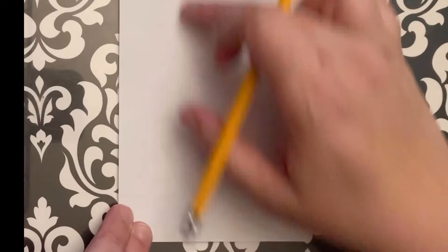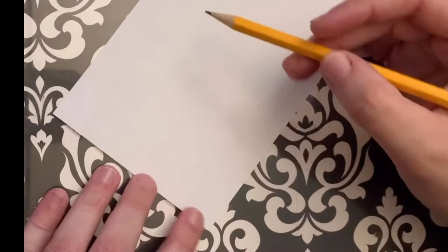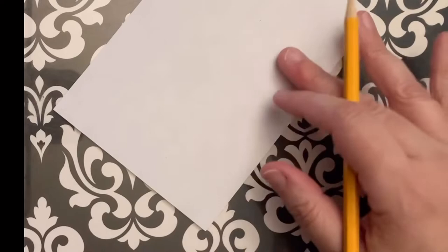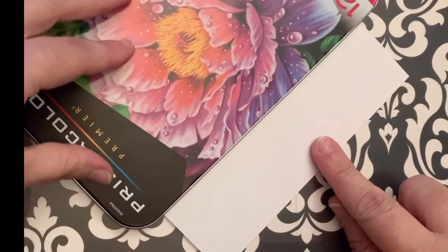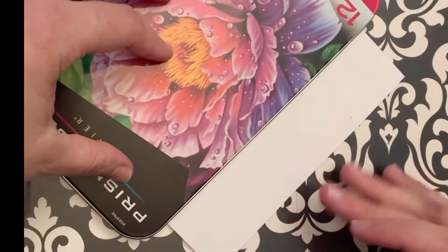We're going to start with a nice line, and you could grab anything that you have around that has a straight edge. I'm actually going to use the cover of my color pencils to make a straight line towards the bottom, not right at the bottom. I'm about two and a half inches above the bottom.